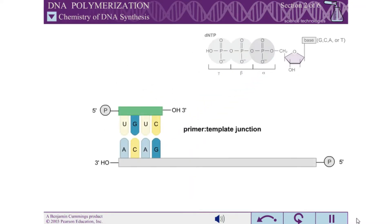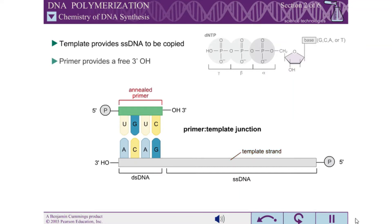The primer template junction has two key components. The template provides the single-stranded DNA to be copied. The primer provides a free 3 prime hydroxyl at which a DNTP can be added.